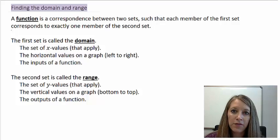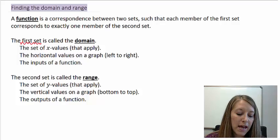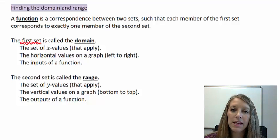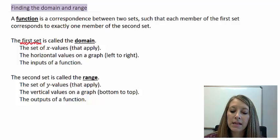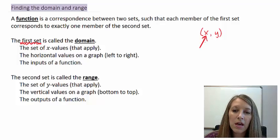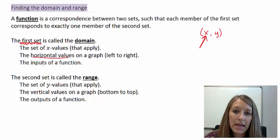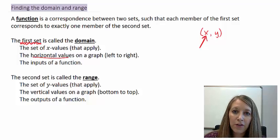My function is defined the exact same way here, but let me give some more details about domain. In the first definition, we called it just the first set in our relationship between the first and second set. But now that we are graphing things, we talk about these sets as ordered pairs, so we have them defined as X and Y. That means the first set — the domain — is all the X values that apply in that function, meaning the horizontal values on a graph, or left and right. We can also define them as inputs in a function.